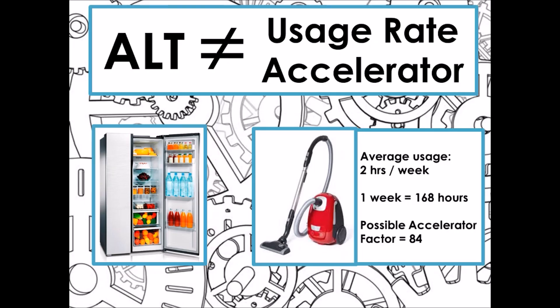First I would like to mention the distinction of the usage rate accelerator and how it's different from what we know as accelerated life testing. Let's imagine we have a vacuum cleaner where the average usage is two hours per week. If you run one week of lifetime testing, you are testing 168 hours, which represents 84 weeks of usage. In the usage rate accelerator you use the normal analysis as in lifetime testing. On the other hand, we have products with a high usage rate, like a fridge, which is always running — and how do we accelerate these kinds of products?